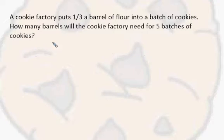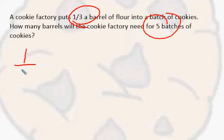And that simply is we have one third of a barrel of flour for every batch of cookies. We're going to have five batches of cookies. So how much flour are we going to need? So I'm going to have one third and I'm going to multiply it by five because this is five groups of one third.